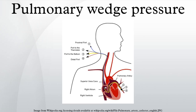Elevated pulmonary capillary wedge pressure strongly suggests failure of left ventricular output. Traditionally, it was believed that pulmonary edema with normal PCWP suggested a diagnosis of acute respiratory distress syndrome or non-cardiogenic pulmonary edema. However, since capillary hydrostatic pressure exceeds wedge pressure once the balloon is deflated, a normal wedge pressure cannot conclusively differentiate between hydrostatic pulmonary edema and ARDS.